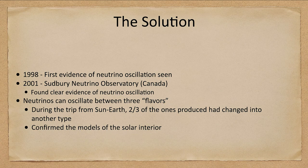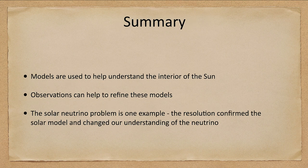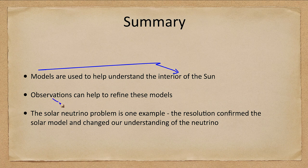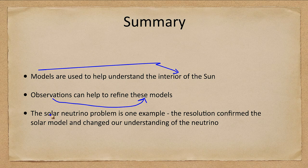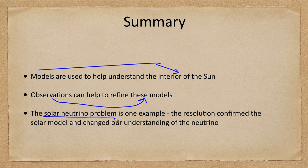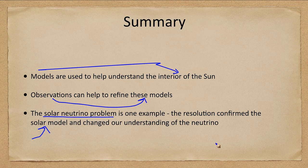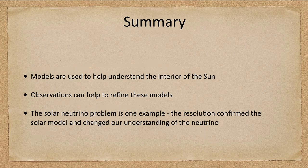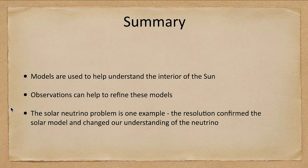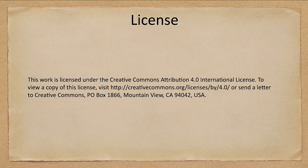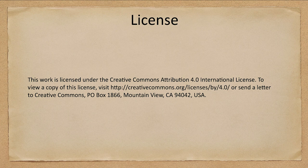So let's go ahead and finish up with our summary. And what we looked at is that we use the models to understand the interior of the Sun, and we use the observations, different types of observations, to refine these models and make them better. And we looked at one example, which was the solar neutrino problem, which the resolution of confirmed our solar model and changed our understanding of the neutrino. So that concludes this lecture on the solar interior theory and observation. We'll be back again next time for another topic in astronomy. So until then, have a great day everyone, and I will see you in class.